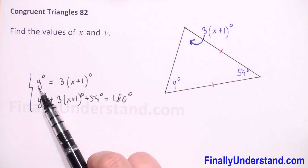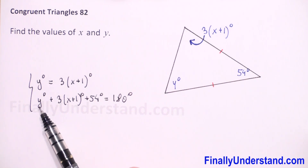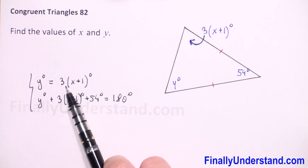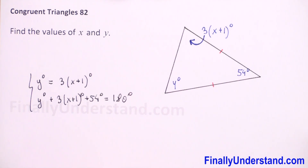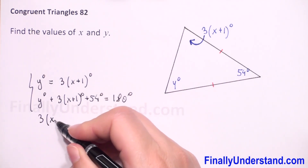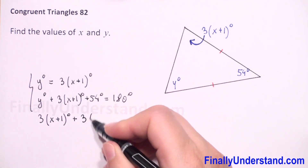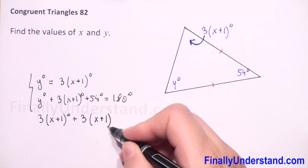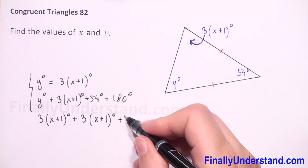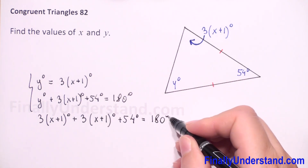We have that y is equal to the expression three times x plus one. So I will substitute y in the second equation with this whole expression. We get: three x plus one degrees plus three times x plus one degrees plus 54 degrees is equal to 180 degrees.